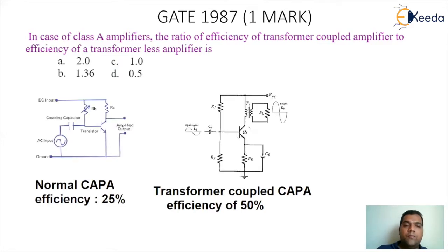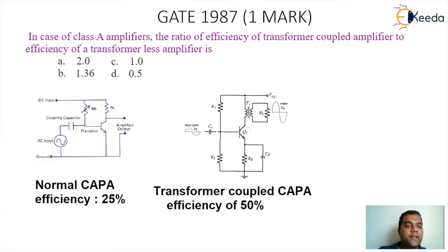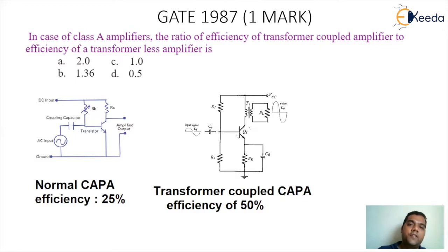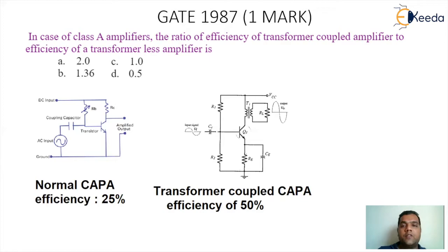We have seen both categories of circuitries in the theory session. The first circuitry is a normal class A power amplifier — that is a transformerless amplifier — and its efficiency comes around 25%. When we go for transformer coupled circuitry, the efficiency increases to 50%. So taking the ratio of transformer coupled to transformerless: 50% divided by 25% equals 2. The correct answer is Option A, 2.